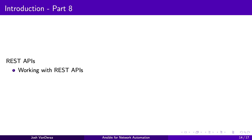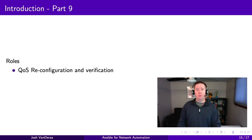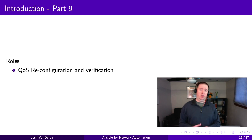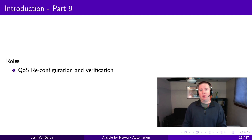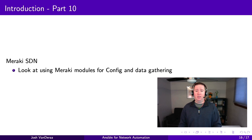Part eight, we get into REST APIs — how do we work with REST APIs with Ansible? Yes, Ansible can leverage those, so we'll have an entire part just on that. And then roles — that's part nine. Roles are how you assign characteristics; for example, a Nexus switch in a data center that's a leaf switch gets leaf characteristics assigned to it. And lastly, part ten, we're going to take a look at Meraki modules and look at their config and data gathering.